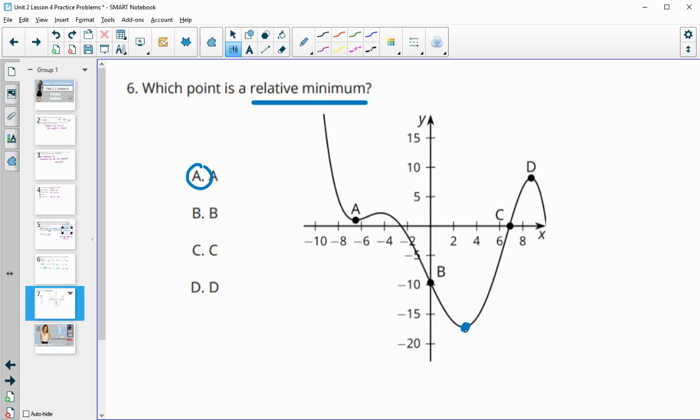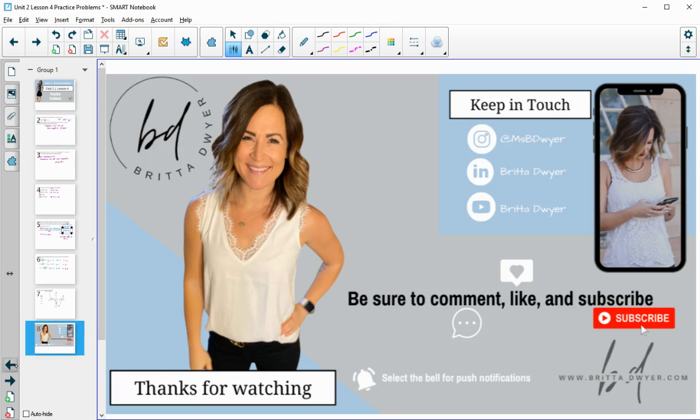We also have another one here - it's just not labeled. But this one and this one are our relative minimums on this graph. So point A would be the one that works in this case.